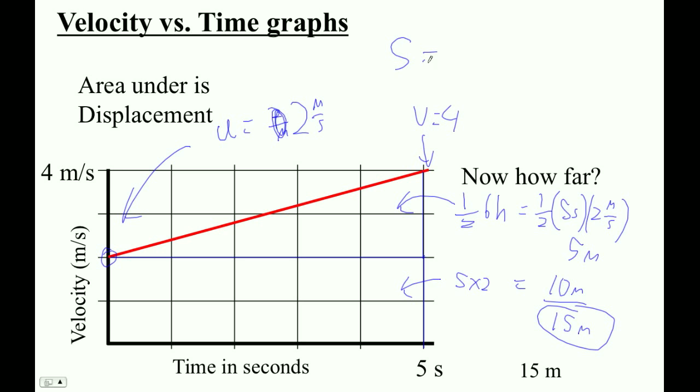The formula we would use is s = (u+v)/2 × t. So let's try it out: two plus four over two times five. Well, two plus four is six divided by two is three times five is 15. So yeah, our area works. That's kind of cool.